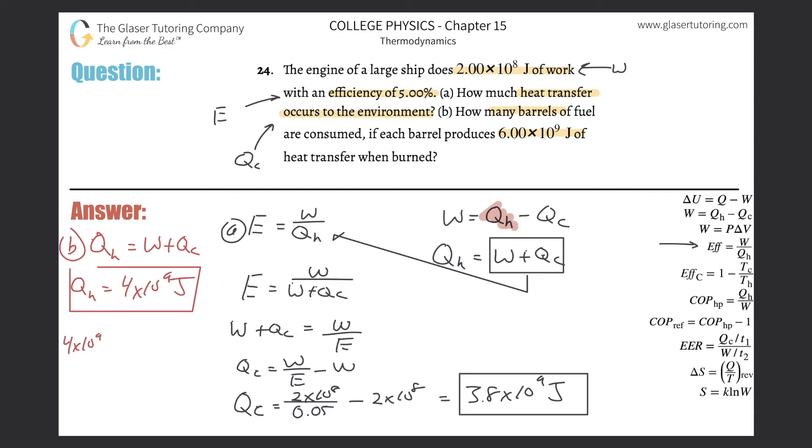We can do dimensional analysis. If this is 4×10^9 joules and I want the joules to cancel and barrels on top, the relationship is for every barrel there are 6×10^9 joules. Divide by 6×10^9 and we get about two-thirds, so 0.667 barrels.